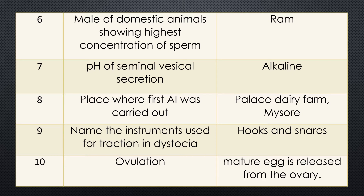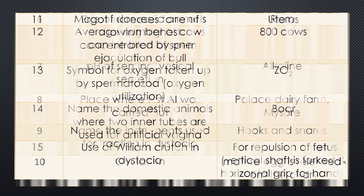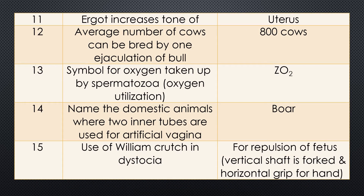Question 10. What is ovulation? Answer: ovulation is the release of a mature egg from the ovary. All questions are important. Question 11. Ergot increases tone of each organ? Answer: ergot increases the tone of the uterus. It is used for increasing tone of the uterus.